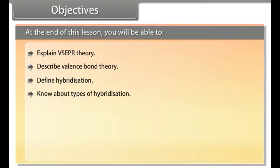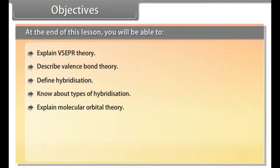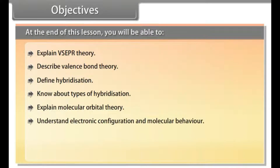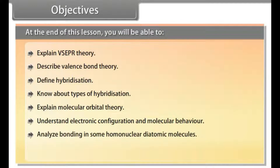At the end of this lesson, you will be able to: explain VSEPR Theory, describe Valence Bond Theory, define Hybridization, know about types of hybridization, explain Molecular Orbital Theory, understand electronic configuration and molecular behavior, analyze bonding in some homonuclear diatomic molecules, and define Hydrogen Bonding.